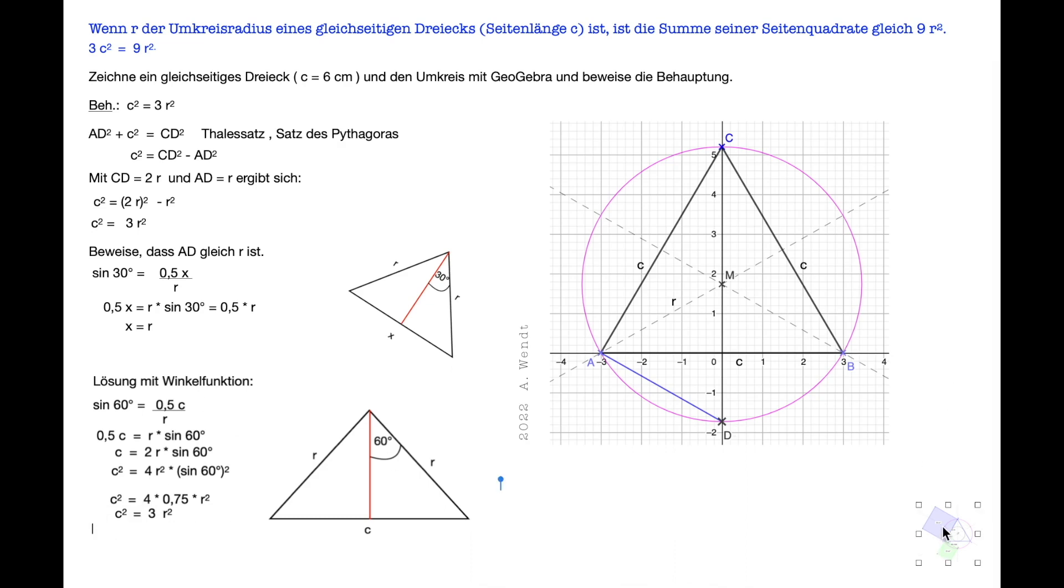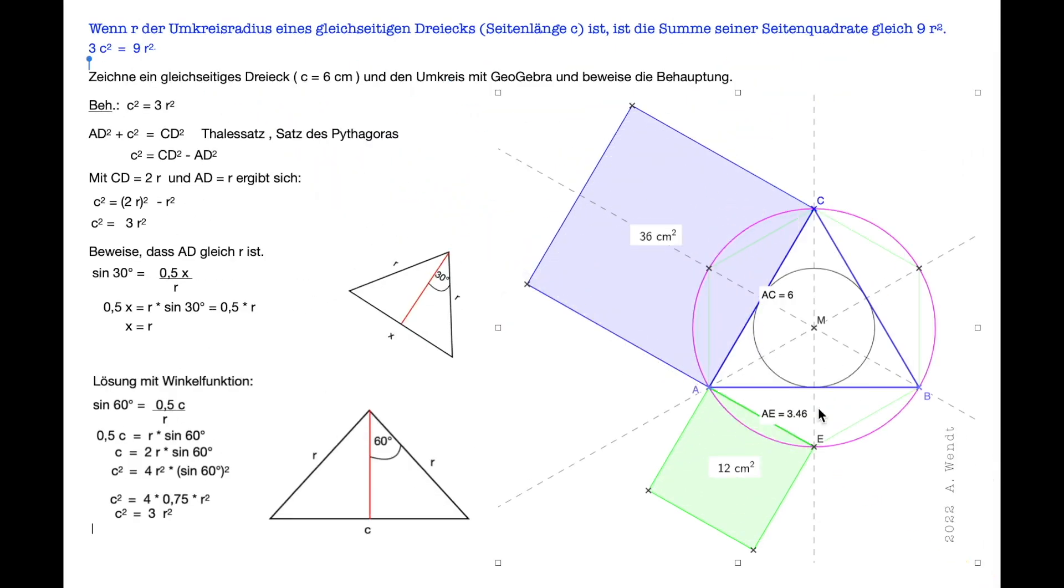Ich habe das jetzt mal gezeichnet, damit man sich das besser vorstellen kann, was der Satz eigentlich besagt. Hier haben wir das gleichseitige Dreieck, also alle Seiten sind in dem Fall 6cm lang. Das Quadrat hier über AC, das ist dann 36 Quadratzentimeter und das Quadrat über dem Radius des Umkreises ist 12 Quadratzentimeter. Das habe ich also mit GeoGebra messen lassen. Jetzt erkennt man auch, dass dieses Quadrat über der Dreieckseite gerade 3 mal so groß ist, wie das Quadrat über dem Radius des Umkreises.